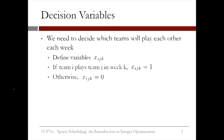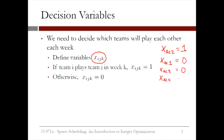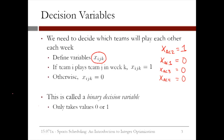Let's start by discussing our decision variables. We need to decide which teams will play each other each week. We'll define decision variables XIJK — if team I plays team J in week K, then XIJK equals 1; otherwise, XIJK equals 0. For example, suppose team A plays team C in week two: XAC2 equals 1. Since A only plays C once, XAC1, XAC3, and XAC4 should all equal 0. This is called a binary decision variable, since it can only take two values: zero and one.